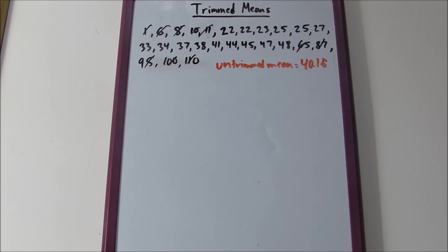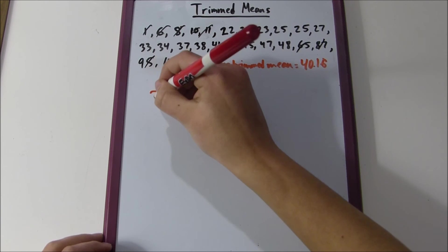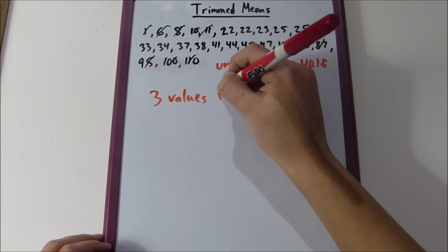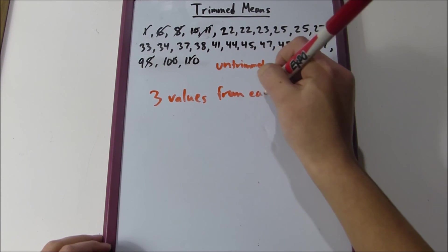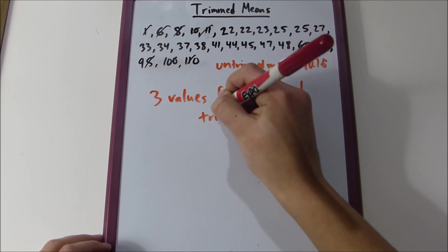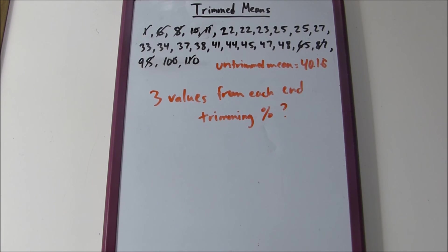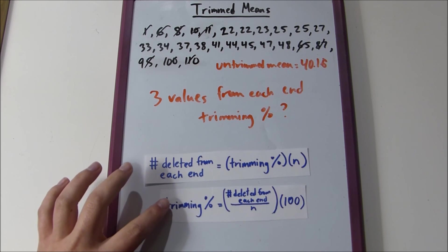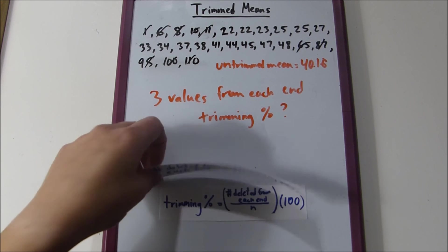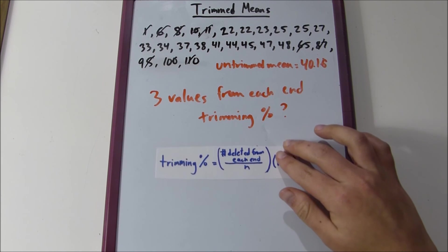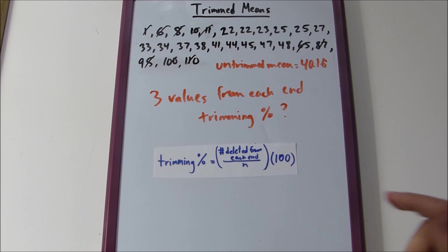For example, the problem might ask you to go backwards. What if it says, if you trimmed off three values from each end, what is the trimming percentage? We know we have this equation, so why don't we just multiply or divide across? That's how simple it is. You simply do number deleted from each end divided by n times 100.